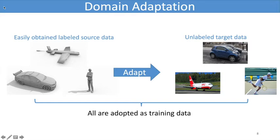As we can see, the easily obtained labeled source data and target unlabeled data are all adopted as the training data. We target at transferring the knowledge from the labeled source data to the unlabeled target data. Note that in traditional domain adaptation, the labeled data and unlabeled data should share the identical label space.